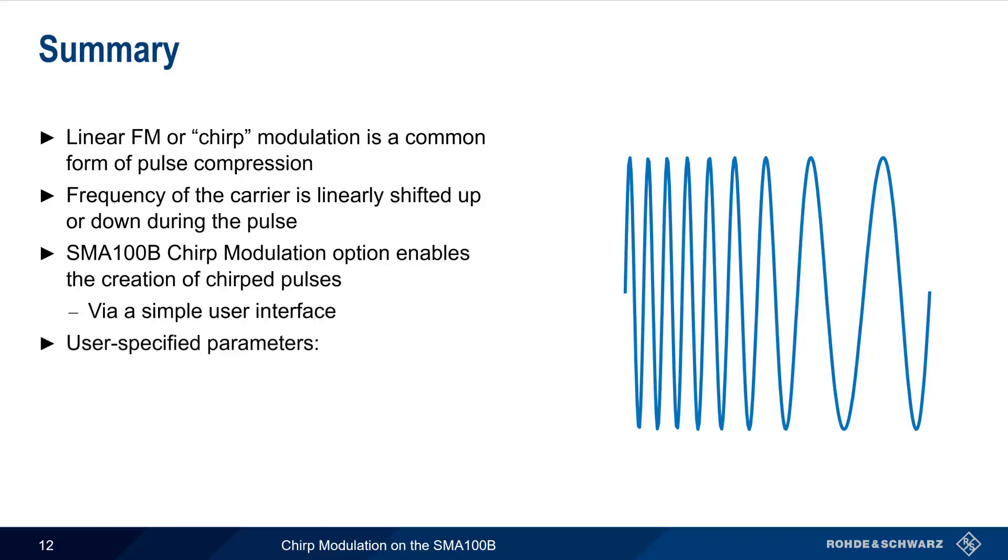The user specifies the three fundamental parameters of a chirped pulse, namely, the direction (up or down), the bandwidth or frequency range over which the pulse is chirped, and the width or interval of the chirped pulses.